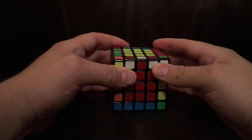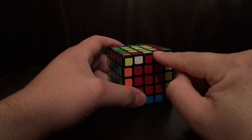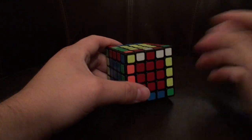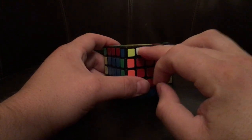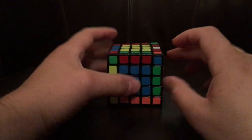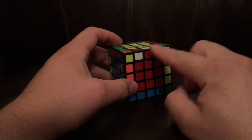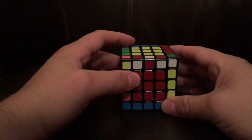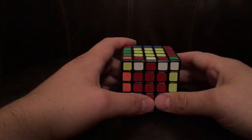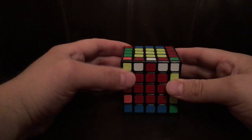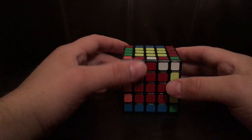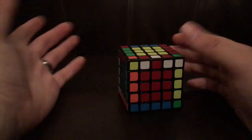Alright, today I'm going to teach you how to solve the last edge parity. Occasionally it'll happen where you have all the edges solved, but the last three cubes are not in the correct orientation. It does happen occasionally, and when it does, it's pretty easy to solve once you get the hang of the algorithm, which I'll show you.